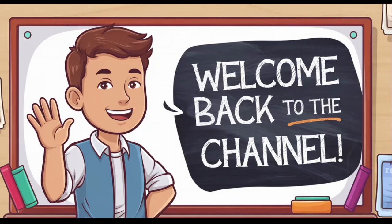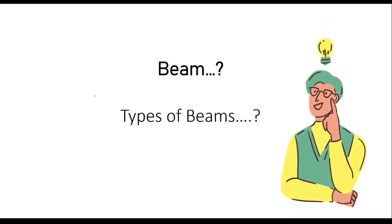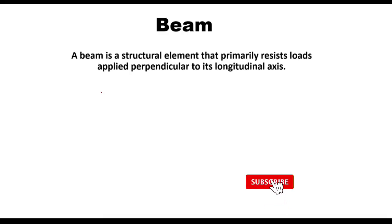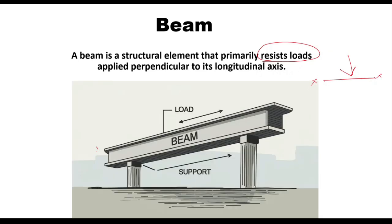Hi everyone, welcome back to the channel. In this video we are going to learn about beams and types of beams. First of all, what is a beam in structural engineering? The basic definition of a beam is it's a structural element that primarily resists loads applied perpendicularly to its longitudinal axis.